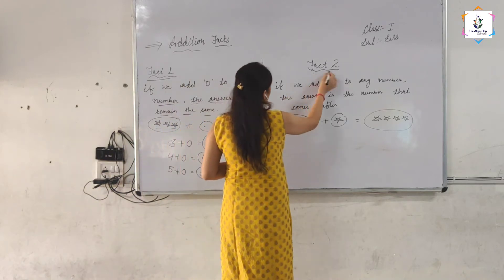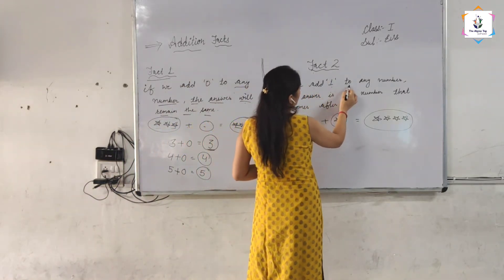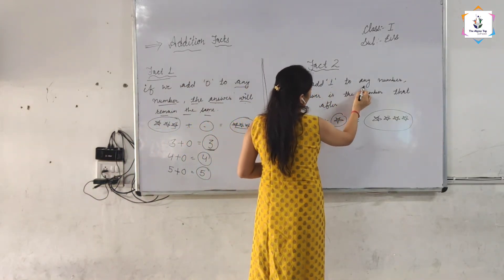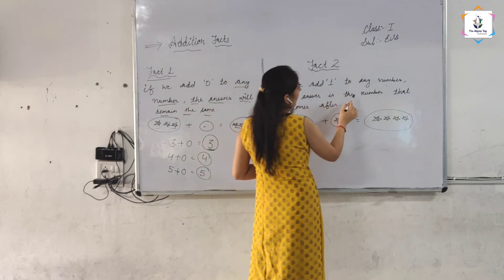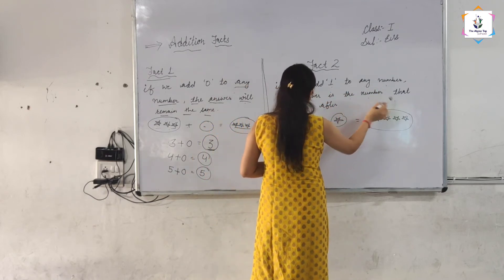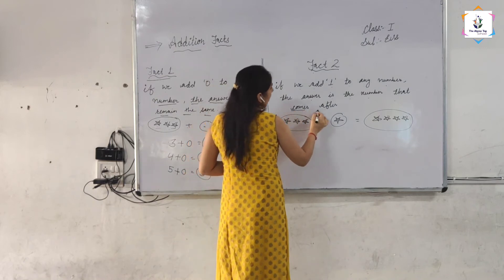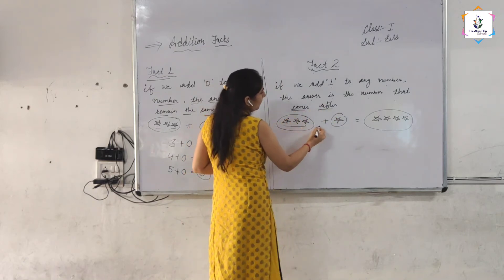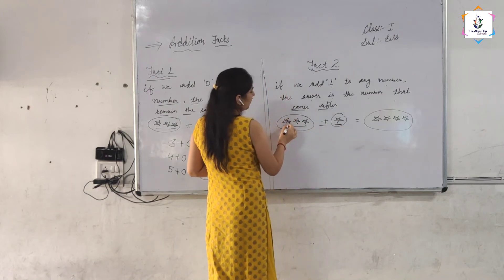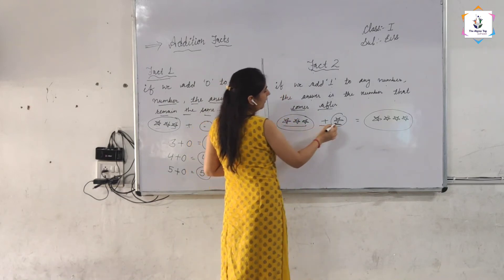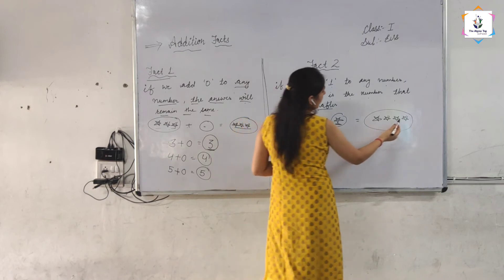Next fact, second: if we add 1 to any number, the answer is the number that comes after. 4 comes after 3. Here 3 stars and 1 star. Total, count with me.